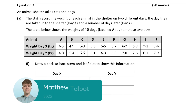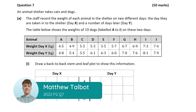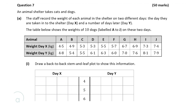Hello, it's Matthew here, and we're looking at question 7, which is worth 50 marks. So we're shown a table with the weights of 10 dogs, and their weights on day X, which is the day that they were taken into a certain animal shelter, and then their weights a number of days later, which we're going to call day Y. We're tasked with drawing a back-to-back stem and leaf plot to show this information.